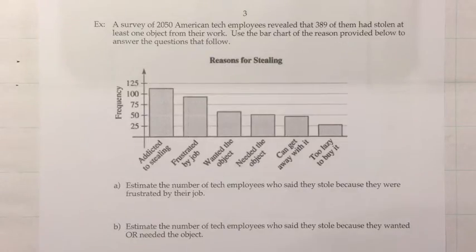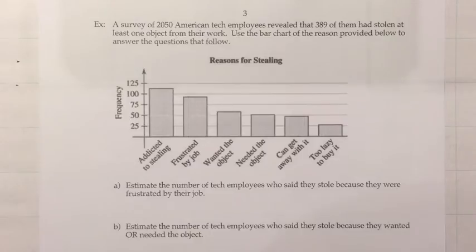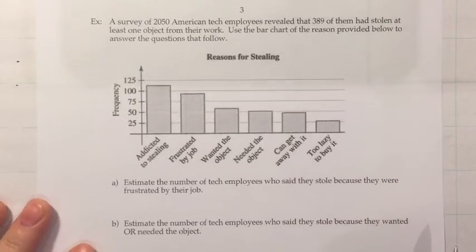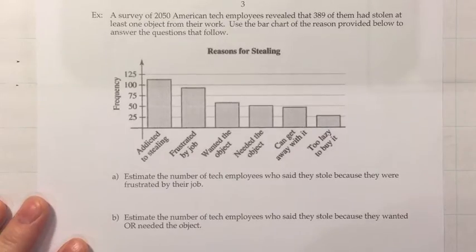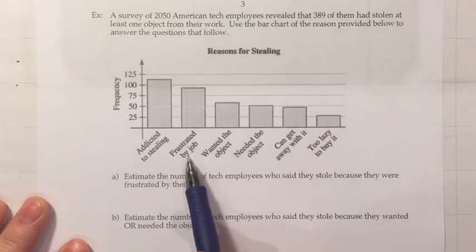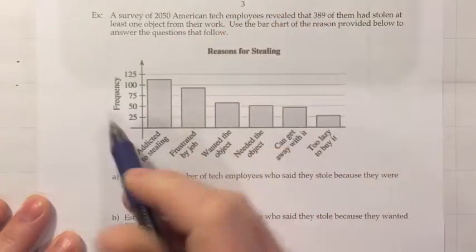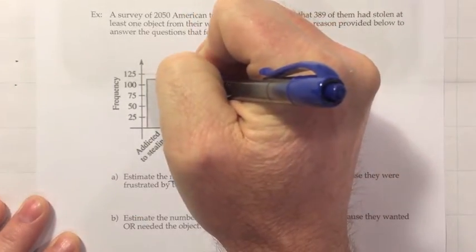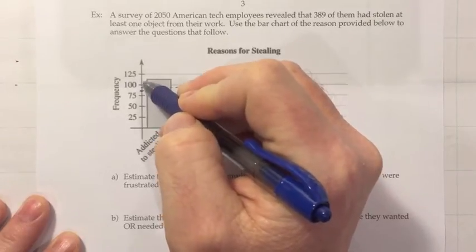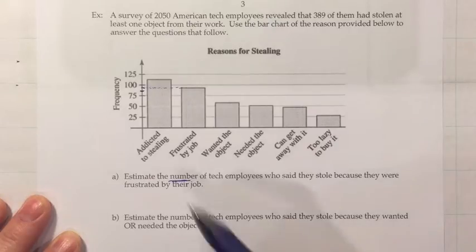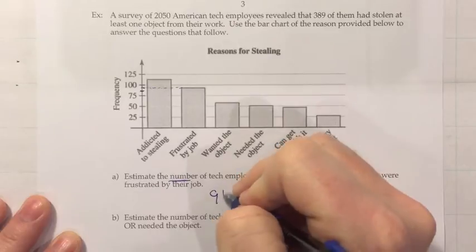Here's a bar graph example: a survey of 2,050 American tech employees revealed that 389 had stolen at least one object from work. We'll use the bar chart of reasons provided to answer questions. First: estimate the number of tech employees who said they stole because they were frustrated by their job. Finding that bar, we look at the height — it appears to be about a third of the way between 75 and 100, maybe around 91 employees.